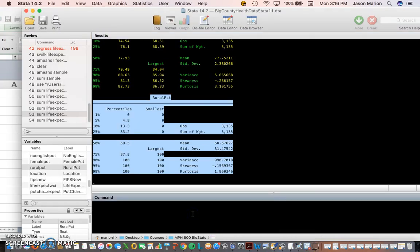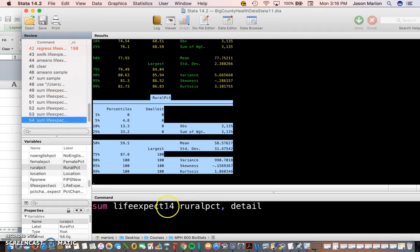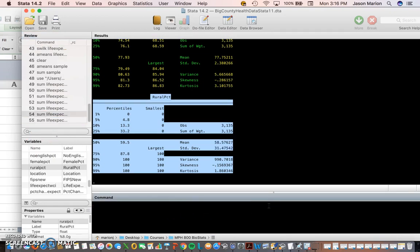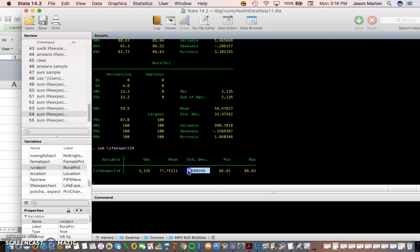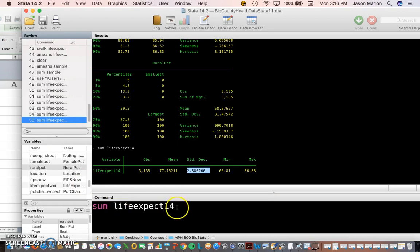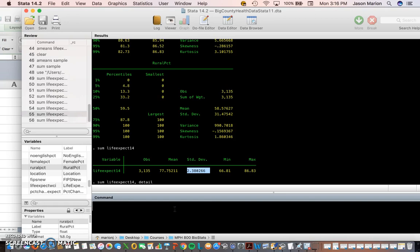Doing that in Stata is very simple. We just do sum life expectancy, and that gives us our standard deviation. Sum stands for summary statistics, so summary life expectancy.